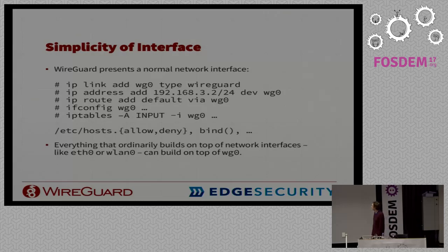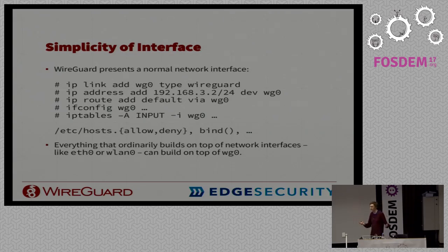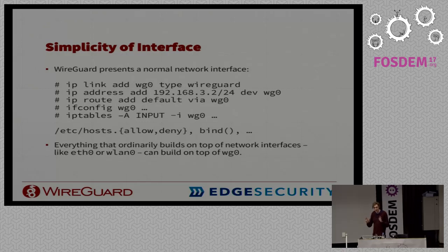It's also really simple to use. Rather than the complicated IPsec XFRM system or OpenVPN daemons, with WireGuard you just get a normal network interface that you administer using all the tools you already know — ip route, etc. To add a WireGuard interface: ip link add, just like any other virtual interface. To set the address: ip address or ifconfig. Routing works the same way and you can use iptables. Because WireGuard is just an interface, everything that ordinarily builds on top of eth0 or wlan0, you can build on top of wg0.